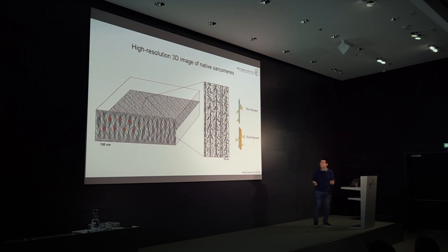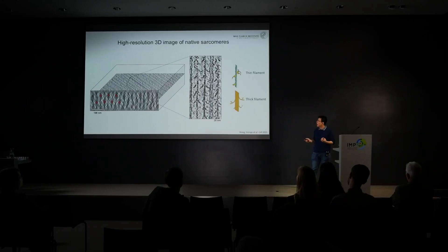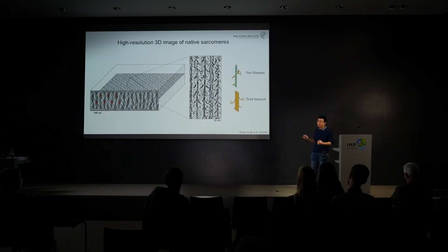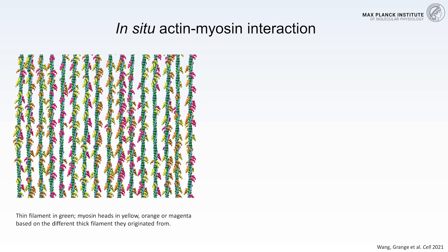This is a three-dimensional image, so we can also view it from the side, showing the classic ordered hexagonal arrangement of thick and thin filaments. The high contrast and resolution allow us to identify individual molecules without any staining, simply by the shape of the protein. We can identify the densities corresponding to all the actins and myosins, producing a molecular map of the entire region — thin filaments shown in green, all in registry, and myosin heads colored in yellow, orange, and magenta.